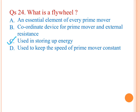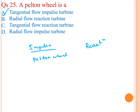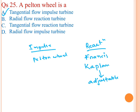A Pelton wheel is a tangential flow impulse turbine, not a radial flow reaction turbine and not a radial flow impulse turbine. Francis and Kaplan turbines are reaction turbines; the Kaplan turbine has adjustable blades and high part-load efficiency.